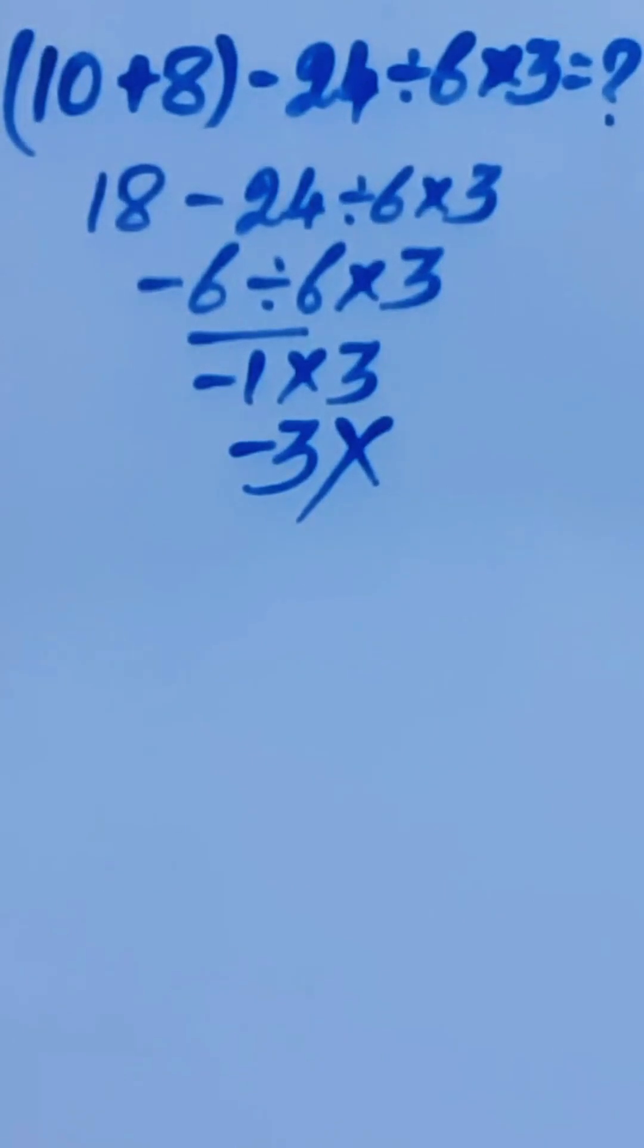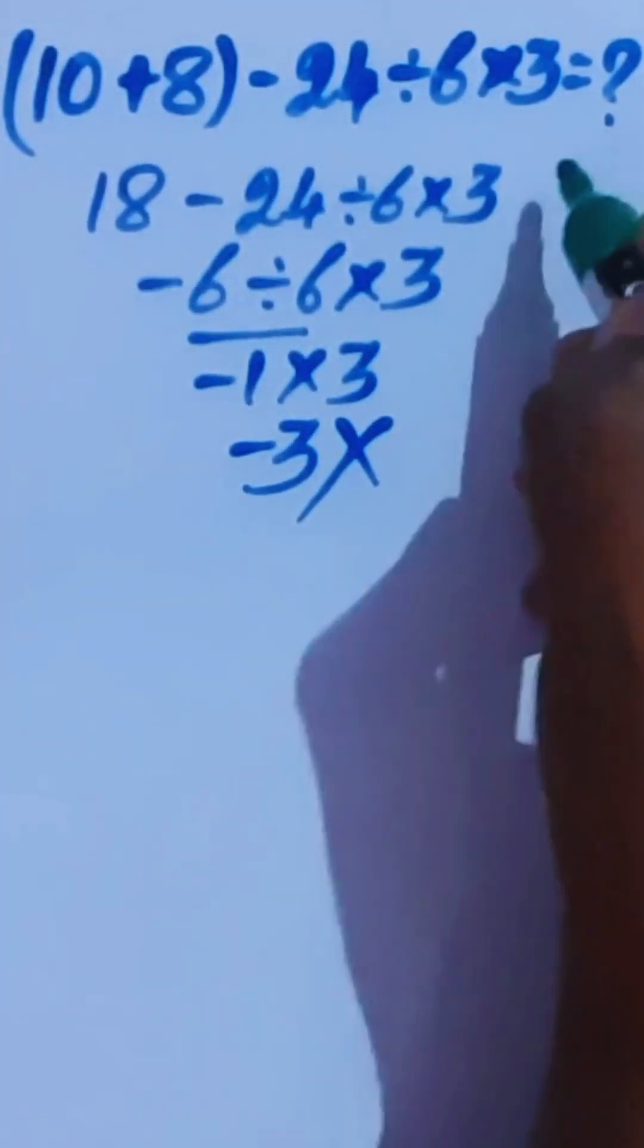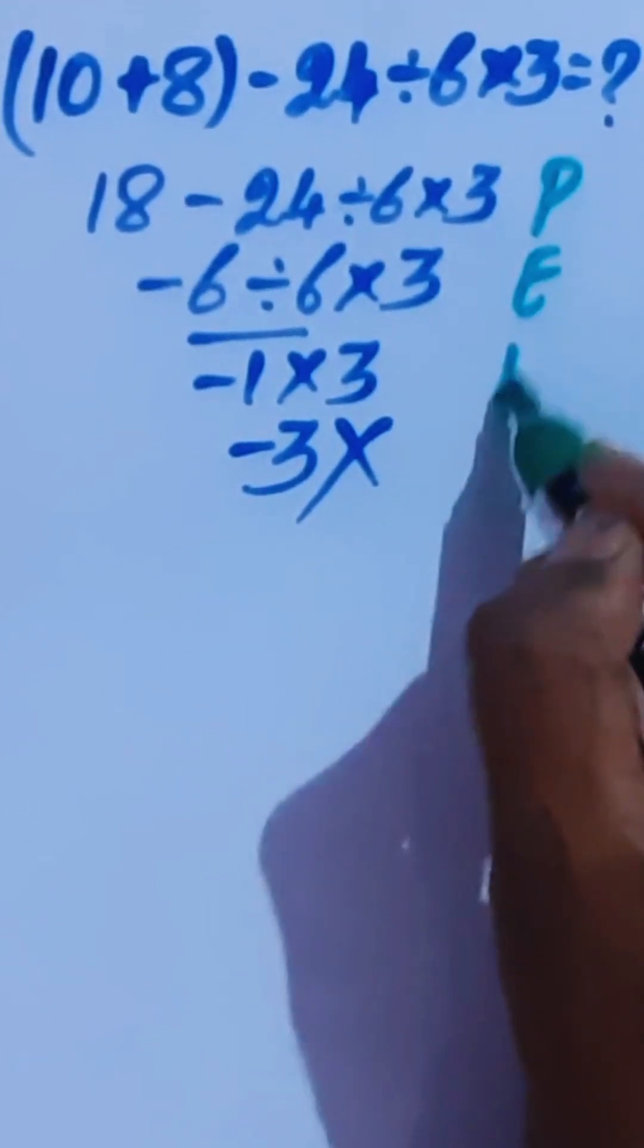As per the order of operation, this negative 3 is the wrong answer. Now we are going to introduce that PANDAS rule.